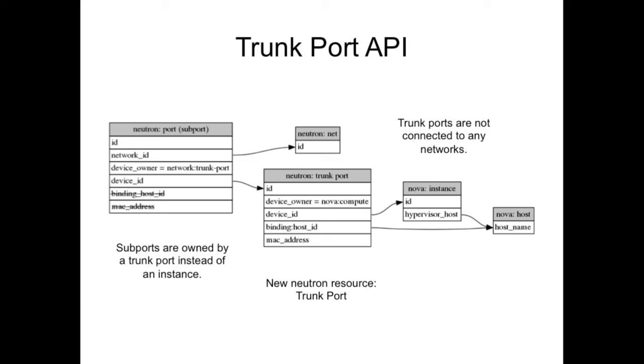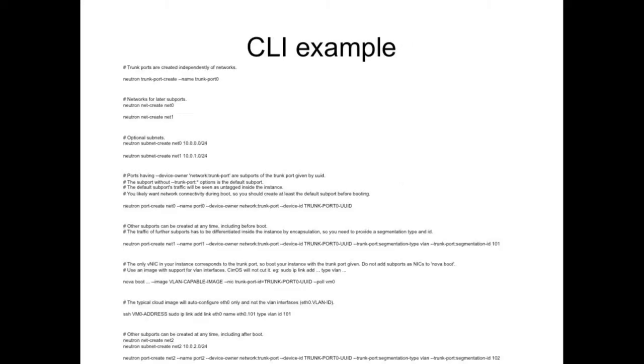If we have this API extension, then if you're interested in the details, later you will be able to download the slides and go through the nitty-gritty details here. The basic thing that you will find in this slide is that you have to create a trunk port first, boot your VM with it, and then at will you can attach and detach sub ports.